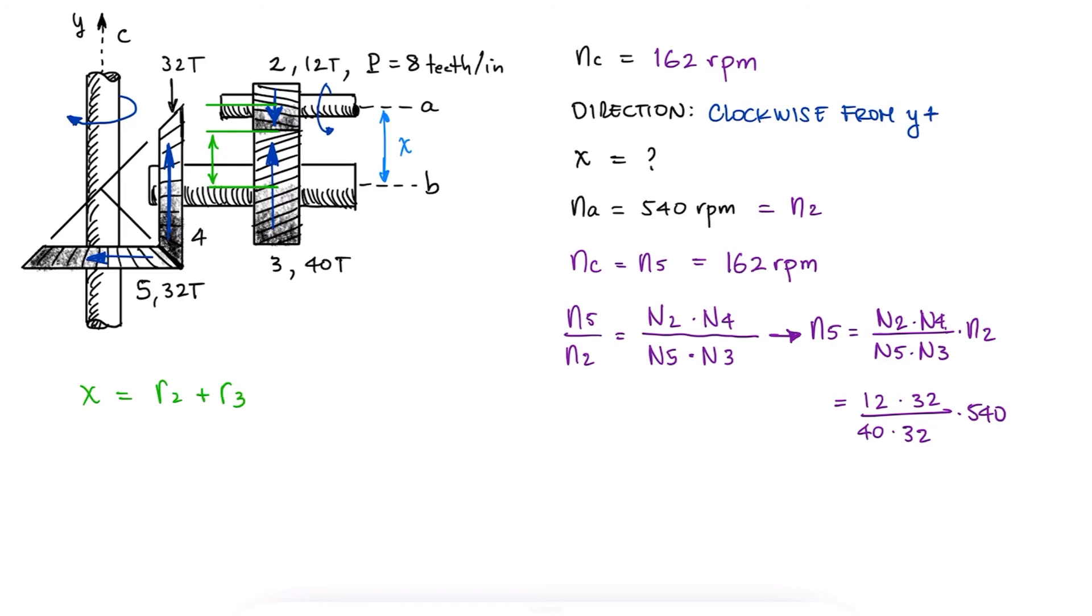For the distance x between shaft A and shaft B, we need the pitch radius of gear 2 and gear 3, or their pitch diameter. If their diametral pitch is 8 teeth per inch, and from the units we see that the diametral pitch is the number of teeth divided by the diameter in inches.